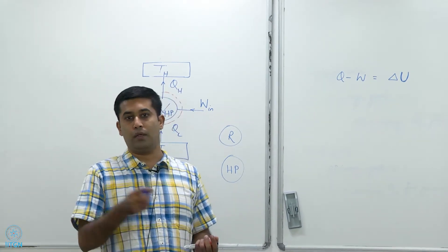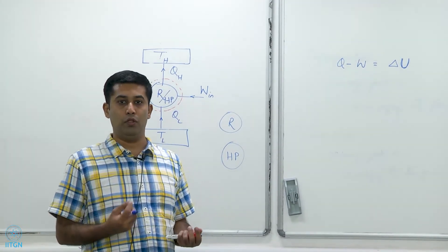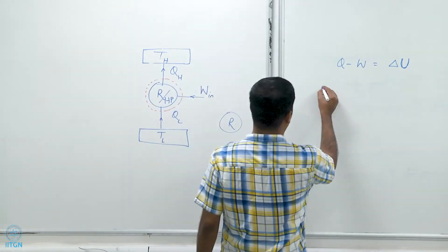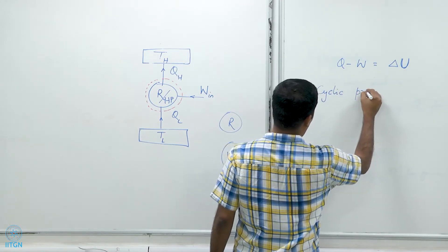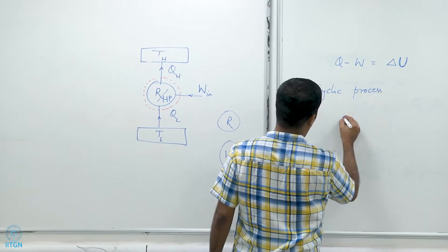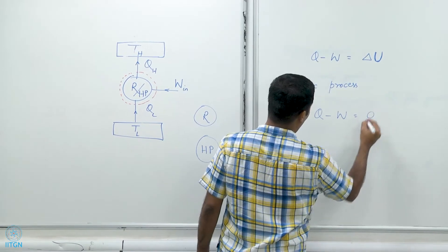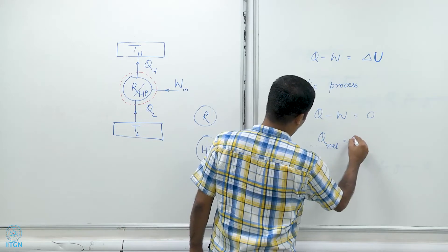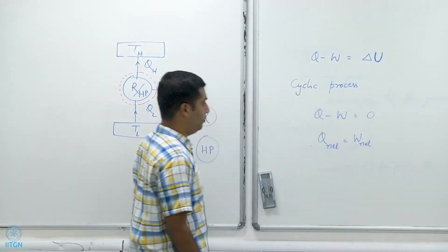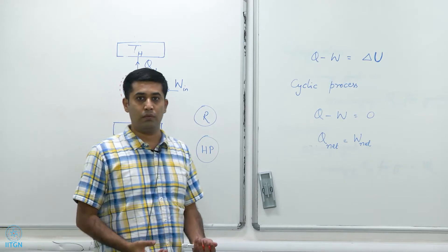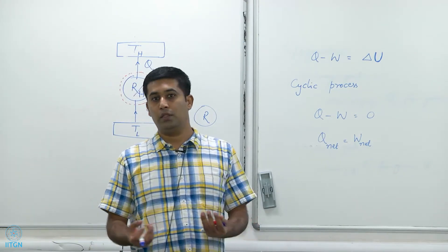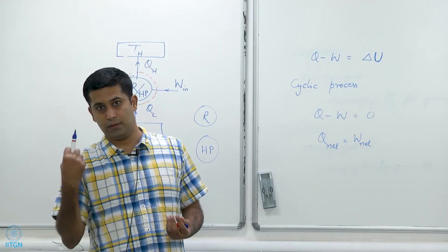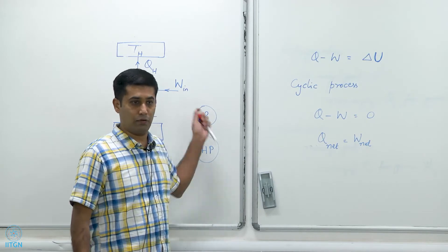Refrigerators and heat pumps also operate in cycles, just like heat engines. For a complete cycle, delta U is zero because U is a state function — when we return to the same state, U is unchanged. Therefore, for a cyclic process, Q minus W equals zero, meaning Q_net equals W_net: the net heat transfer to the system equals the net work done by the system. In this case, the work done by the system is negative.